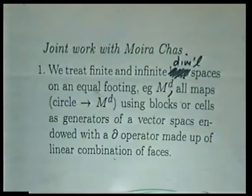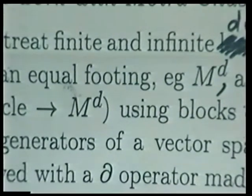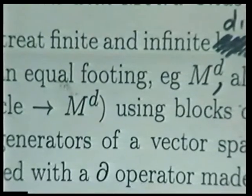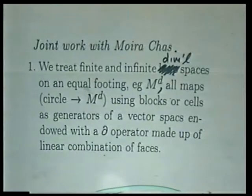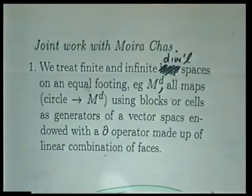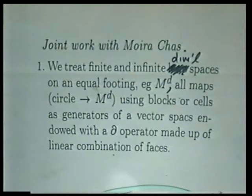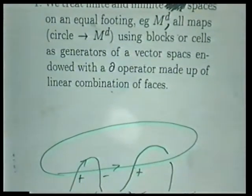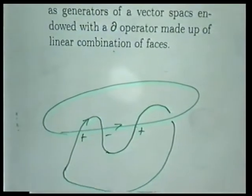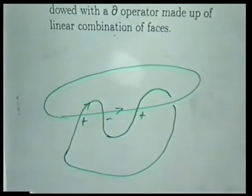This is joint work with Morbid Shass. There's a little bit of philosophy at the beginning. The idea is that we're going to use the method of algebraic topology to treat spaces, and finite dimensional and infinite dimensional spaces are treated on an equal footing by considering — so the two examples are like a finite dimensional manifold M_d, and that's a finite dimensional example.